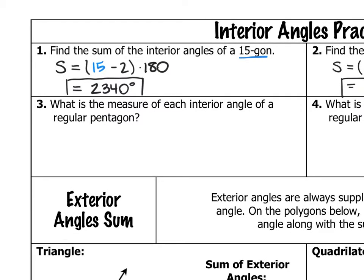Example three: what is the measure of each interior angle of a regular pentagon? First, we need to find the sum of the interior angles of a pentagon. That would be S equals 5 minus 2, that quantity times 180 — so 3 times 180, which is 540. Then, to find a single angle measure, since it's a regular pentagon, we take 540 divided by 5, which equals 108 degrees.